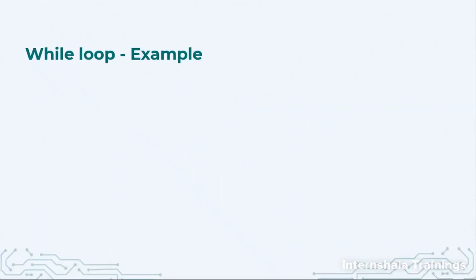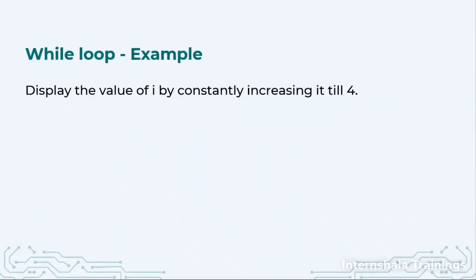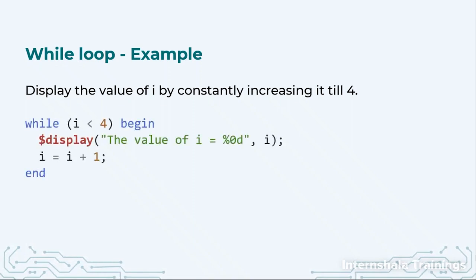So here we have one example where we have initial value of i as 0, and then we are increasing it and we want to display all the numbers until it reaches 4. So we say while i is less than 4, and between begin and end we mention: display the value of i and then increase it. So initially the value is 0. It will display 0 and then 0 will be incremented to 1.